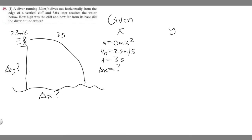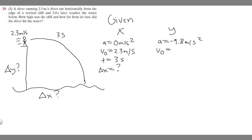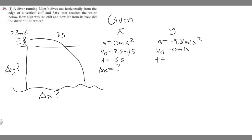In the y direction: since we're on Earth, acceleration is minus 9.8 meters per second squared. The initial vertical velocity v-sub-zero is zero meters per second, because no initial vertical velocity is specified. Time is the same — three seconds — because it takes three seconds to hit the ground regardless of direction. And delta y equals question mark, since that's what we're solving for.